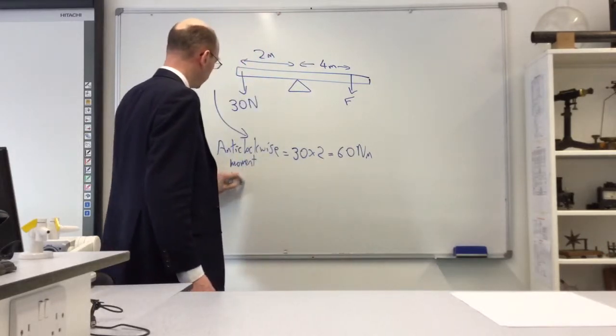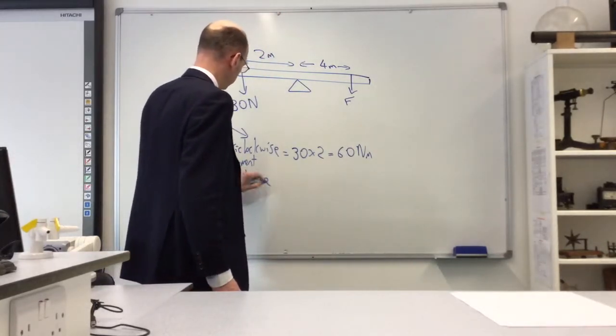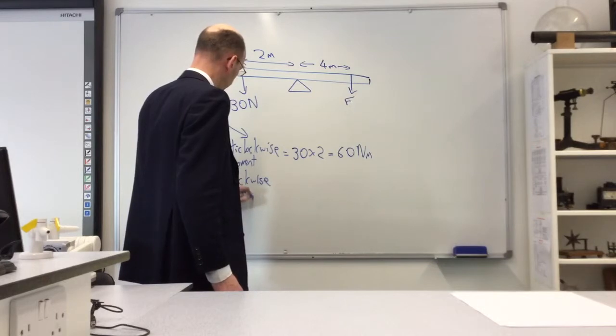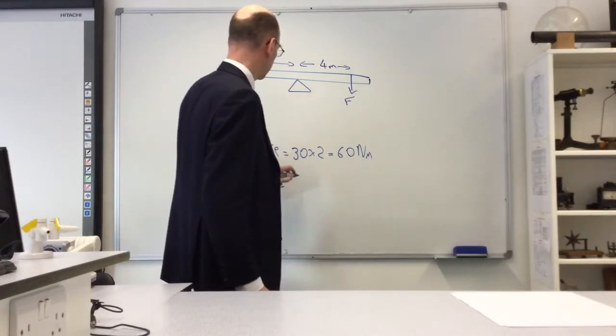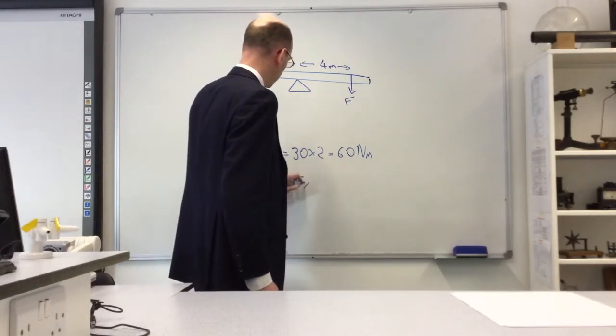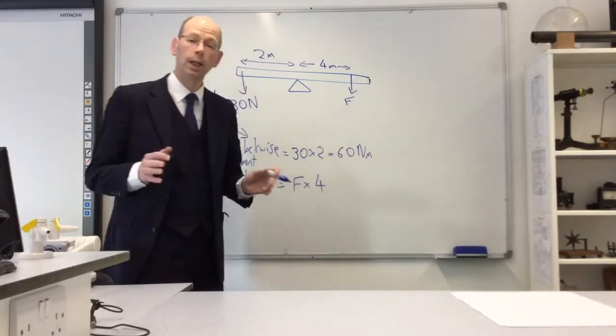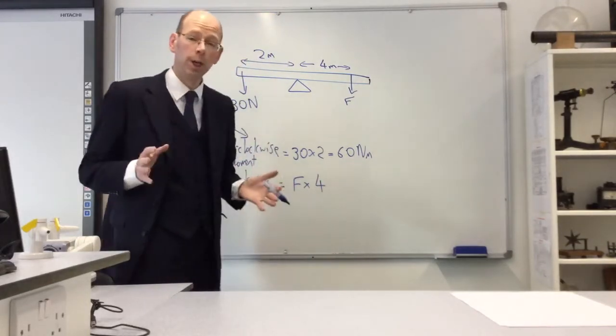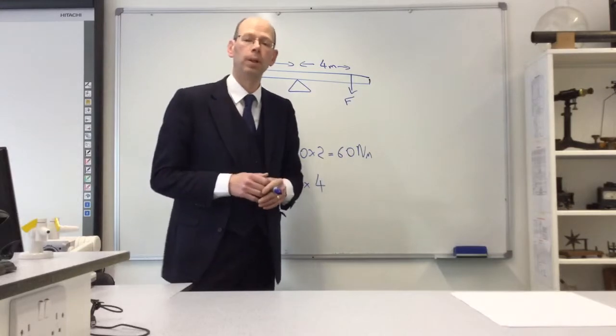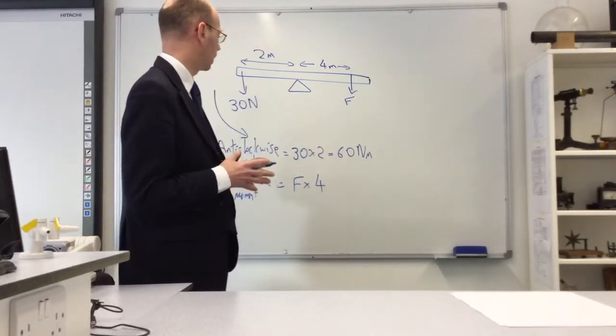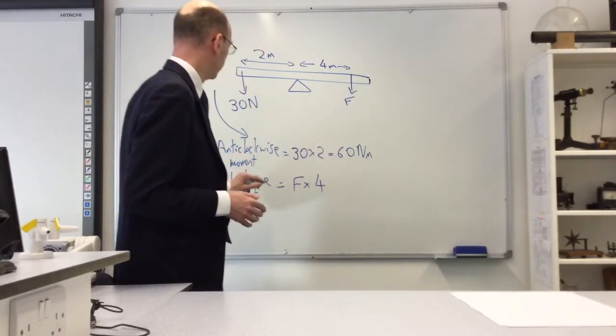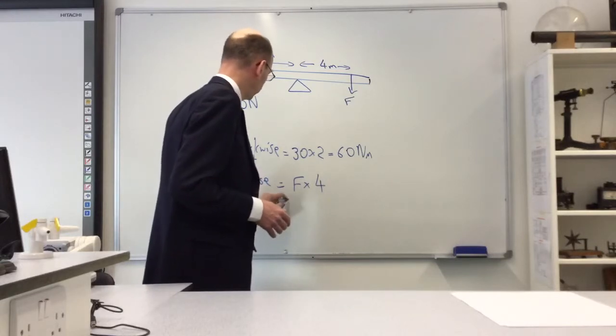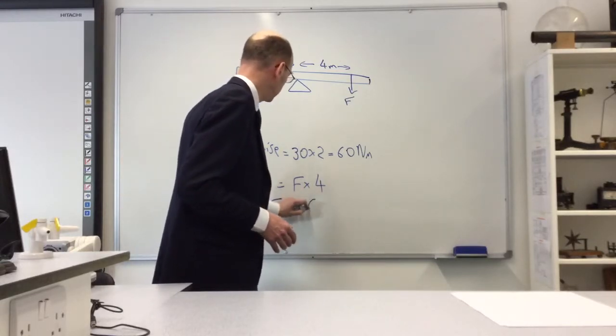What about the clockwise moment? We don't exactly know—it's a force times a distance, and we don't yet know the force. But if the beam is in equilibrium, the two moments must be equal. So F times 4 equals 60, which means if I rearrange that equation,